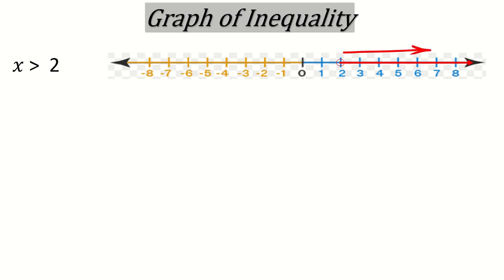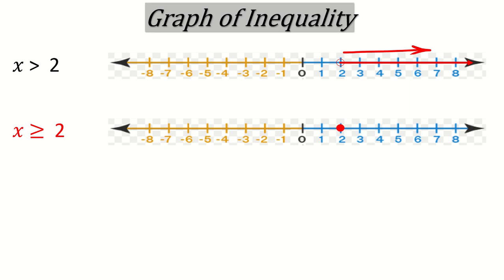Because it is greater than, the line goes right. Now for x is greater than or equal to 2, it will be the same graph but you will color the circle. Why? Because we have equal to also. So this is the same number line with a filled circle, and it will go to the right because it is greater than. You need to remember two things: whether to go left or right, and whether to make a blank circle or color the circle.